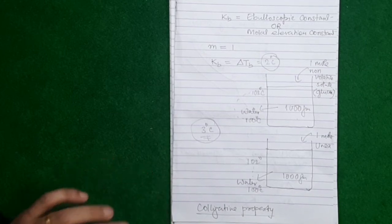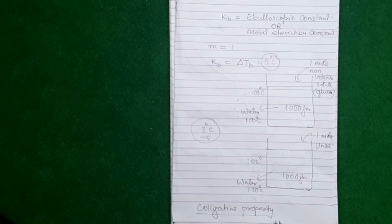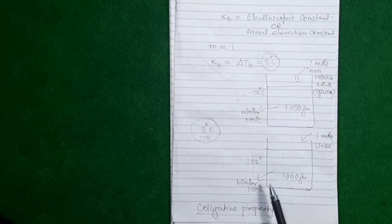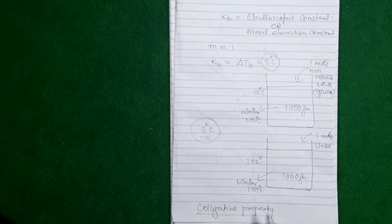Such a property — which only depends on how much you add and not on what you add — is known as a colligative property. So this is the second colligative property we have come across. The first was relative lowering of vapor pressure, which equals the mole fraction of the solute and depends on how much solute is added but not on what kind. Similarly, elevation of boiling point depends on how much solute is added, not on the chemical nature — that's why it is a colligative property.